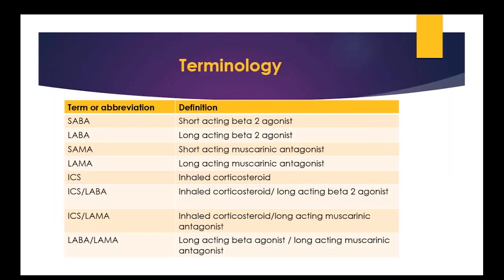A brief review of terminology: a SABA is a short-acting beta agonist; a LABA is a long-acting beta agonist, like salmeterol or formoterol; a SAMA is a short-acting muscarinic antagonist, like ipratropium; a LAMA is a long-acting muscarinic antagonist, like tiotropium. ICS stands for inhaled corticosteroids, such as fluticasone, beclomethasone, or budesonide. ICS-LABA are inhaled corticosteroid/long-acting beta agonist combos. LABA-LAMA is a long-acting beta agonist/long-acting muscarinic antagonist combination.